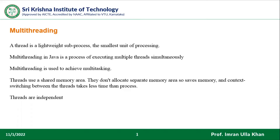Multi-threading is a process to execute multiple threads at the same time without dependency on other threads. Threads are independent — they don't depend on each other — and threads use a shared memory area; they don't allocate separate memory. That saves memory, and context switching between threads takes less time than between processes. In multi-processing, different processes get different memory locations, but in multi-threading all threads use the common memory area.